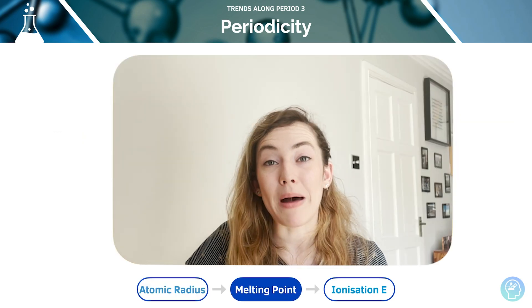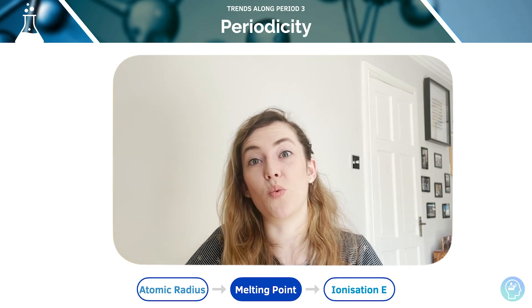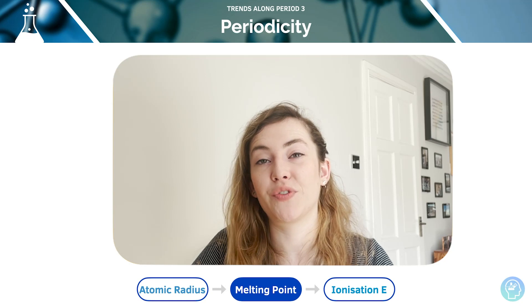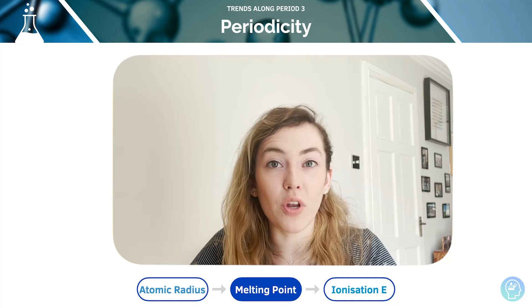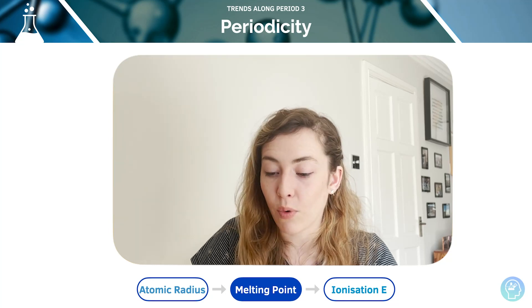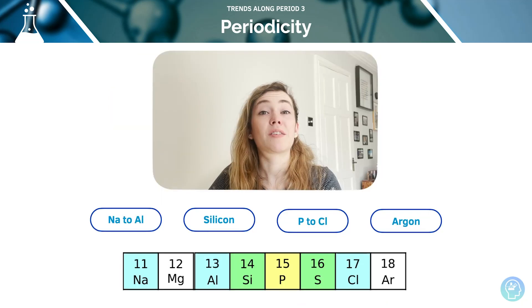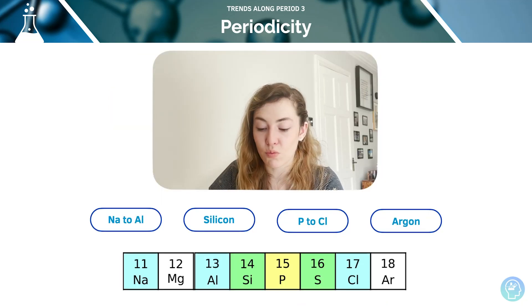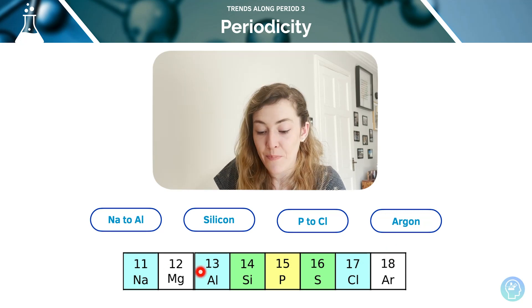We can also think about the melting point as we move across period 3. As we move across the period, it changes according to the structure — that's really important. We've got different types of structure and intermolecular forces as we move across period 3, so both structure and bonding is going to have an effect on melting point. As soon as you hear melting or boiling point, alarm bells should be ringing — think about things like van der Waals forces, giant covalent structures, and inter- and intramolecular bonding. This can be notoriously quite challenging because there are lots of different types of bonding and structures within period 3.